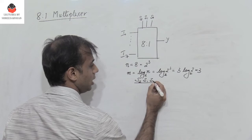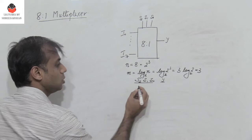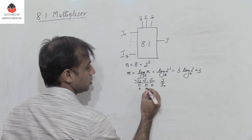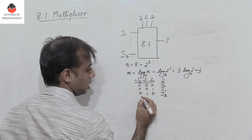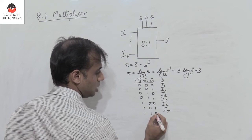Since there are 3 select lines, they can vary from 0,0,0 to 1,1,1. When they are 0,0,0 the output is i0. When 0,0,1 the output is i1. When 0,1,0 the output is i2. When 0,1,1 the output is i3. When 1,0,0 the output is i4. When 1,0,1 the output is i5. When 1,1,0 the output is i6. And when 1,1,1 the output is i7.